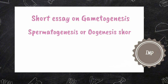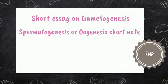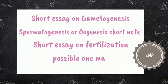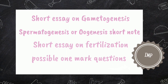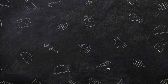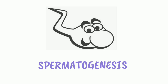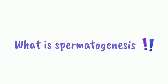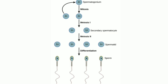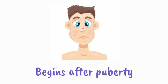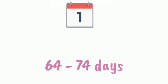Spermatogenesis is the process of development of mature spermatozoa from spermatogonium. The site is the seminiferous tubules. It begins after puberty and the duration is 64 to 74 days.